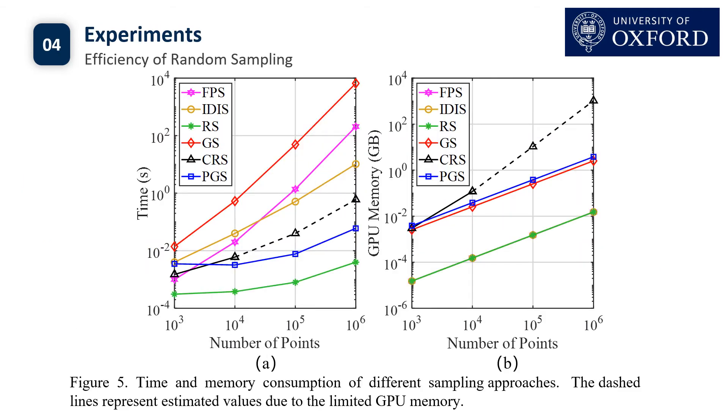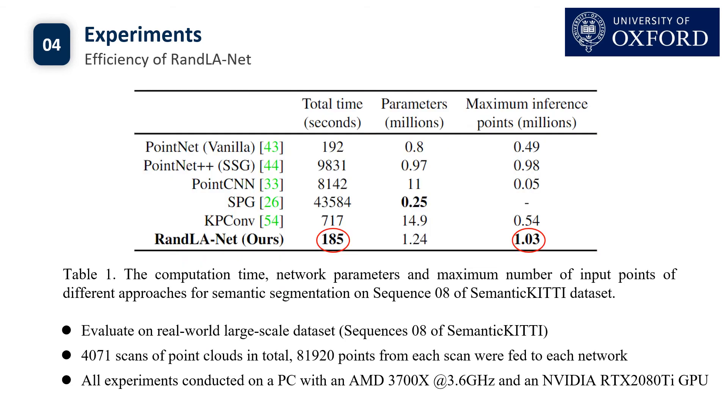Here, we first evaluate the efficiency of existing sampling approaches by increasing the number of points from one thousand to one million points. We can see that random sampling has super real-time and memory efficiency overall. In addition, our RandLA-Net takes the shortest time to process the whole sequence of Semantic KITTI dataset, which is 200 times faster than SPG.